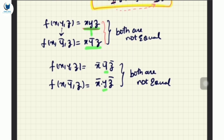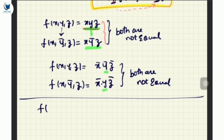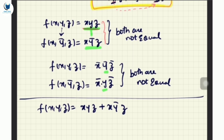I will define this function as a combination. Suppose I define f(x, y, z) = xyz + xy_bar·z. I will combine both and make a new function.